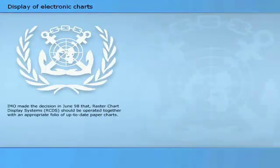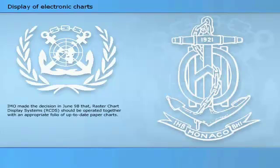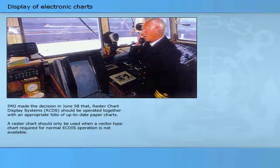IMO made the decision in June 1998 that raster chart display systems, RCDS, should be operated together with an appropriate folio of up-to-date paper charts. Later discussions between IMO and IHO led to the conclusion that raster charts should be viewed as a simplified mode for ECTIS equipment, and the raster chart standard should form a part of the ECTIS performance standards. A raster chart should only be used when a vector-type chart required for normal ECTIS operation is not available.